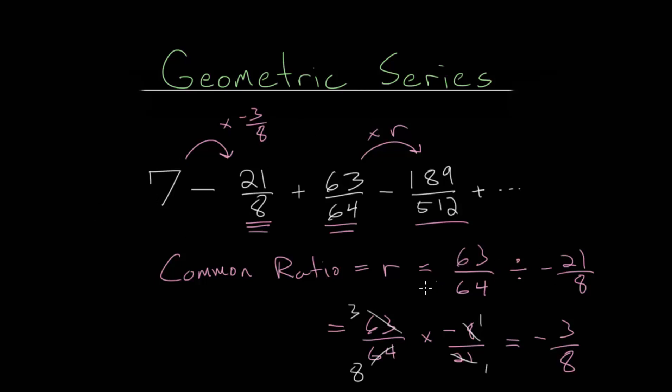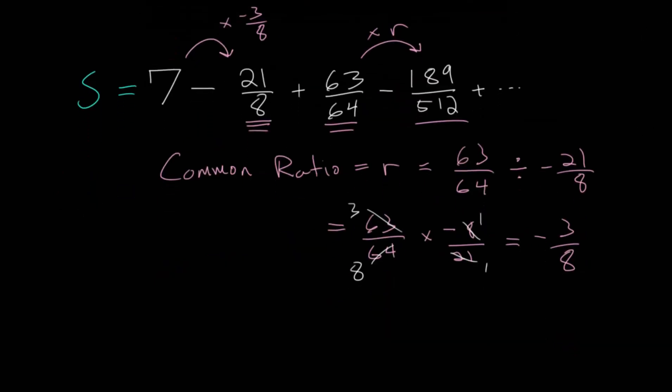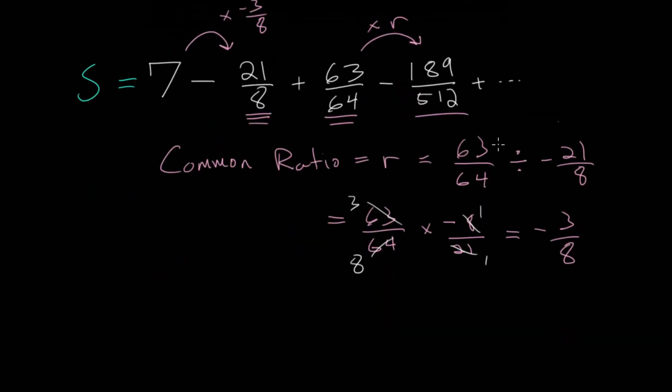So, to actually add up this infinite geometric series, we need to first call this sum variable, and we'll call it S for sum. And we'll use our trick, like we have in previous example problems, where we're going to multiply this entire sum by the common ratio, which is the entire reason we spent time in the beginning figuring that out.